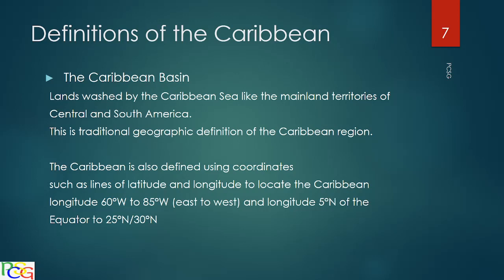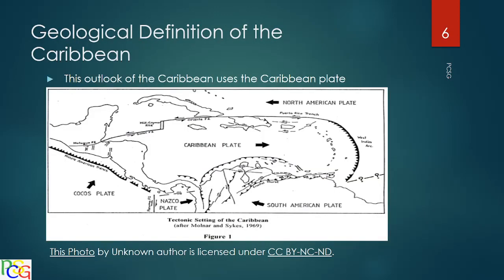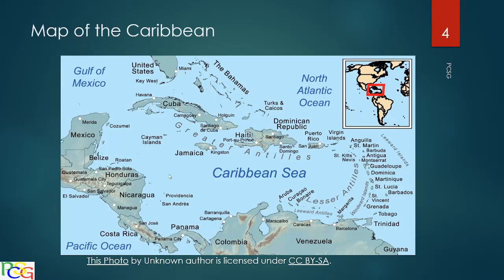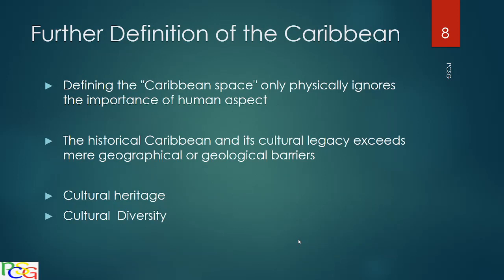For example, the geological definition using the Caribbean plate leaves out a lot of the Greater Antilles and even Panama at the bottom. With the Caribbean Basin definition using lands washed by the Caribbean Sea, you'd note that some islands — like the Turks and Caicos — are not actually washed by the Caribbean Sea. Bermuda is literally outside the map scope and is in the North Atlantic Ocean, not the Caribbean Sea — it's somewhere above the Bahamas. So no single definition gives a full picture.